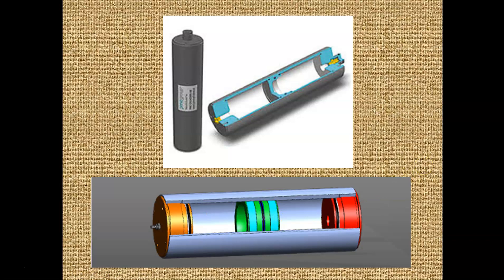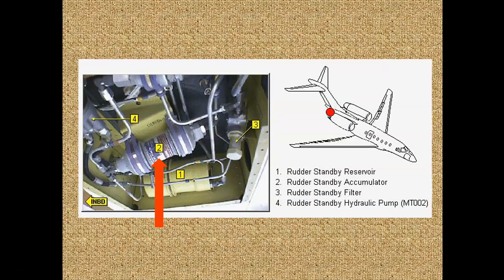Here's another picture of an accumulator. This is for the rudder system on a corporate jet, and we've got the reservoir. They're showing us in here the standby accumulator. This is number 2 is the accumulator, and number 1, this is where the reservoir is, hydraulic reservoir, and then we've got some other components in here.